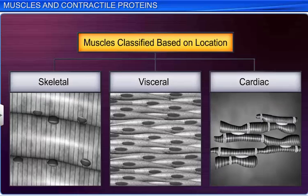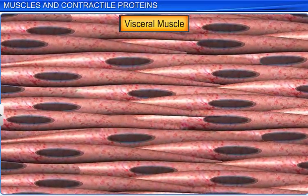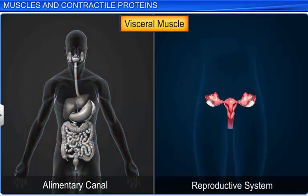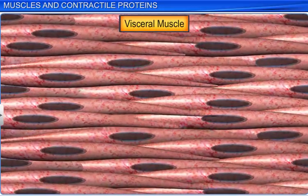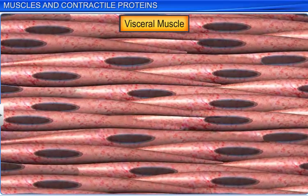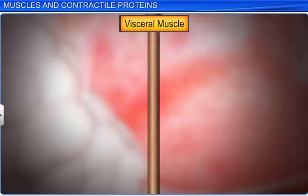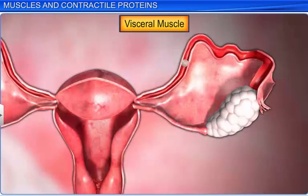Another type of muscle are visceral muscles. They are found in the inner walls of hollow visceral organs, such as the alimentary canal and reproductive tract. In contrast to skeletal muscles, these muscles are unstriated, or smooth and involuntary. These muscles help to carry food through the digestive tract and through the genital tract.